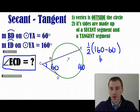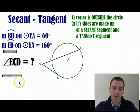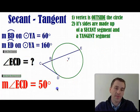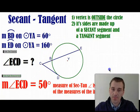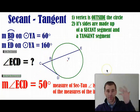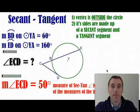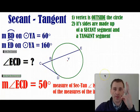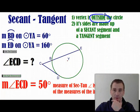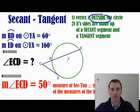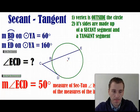The answer is 50, confirmed. You don't need to write a new formula — you already have it. All three angle types — secant-secant, tangent-tangent, and secant-tangent — use the same rule: if the vertex is outside the circle, take half the difference of the intercepted arcs. I'm excited to practice these in class with you. See ya!